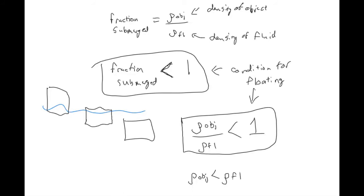It doesn't matter how much mass the thing has or how much it weighs — it just matters how dense it is. You can build something really big like a ship and it will still float as long as the total density of the object is less than the density of water. Density is mass over volume, so if you want to increase mass a lot, you also need to increase volume so that the density remains less than the density of water. That's how something as big as a ship can still float.